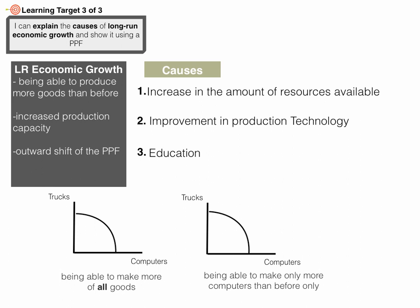Let's take a look at how we show long-run economic growth on the PPF. If there's an improvement in technology that applies to both trucks and computers, we're able to make more of all goods, so we shift the PPF out — this shows increased production possibilities. However, if the improvement in technology only applies to computers and not trucks, we can't make more trucks than before but we can make more computers. This is still long-run economic growth, but we only shift the computer end of the curve out, leaving the truck point on the axis the same.